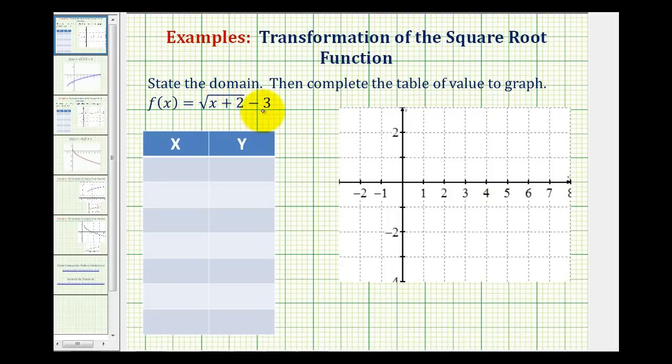We want to state the domain of the given function and then complete the table of values to graph. We have f(x) equals the square root of the quantity x plus 2 minus 3.